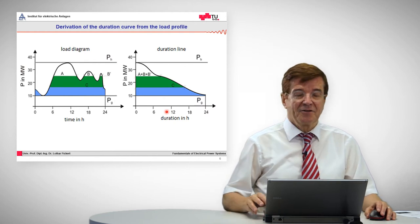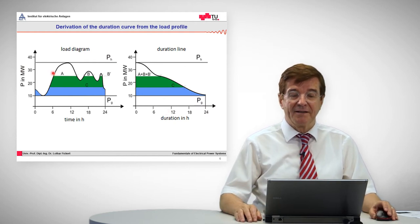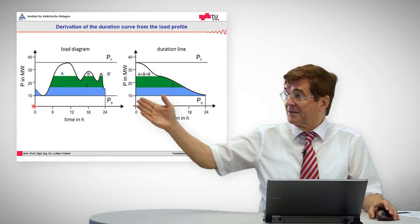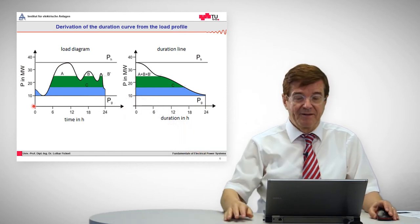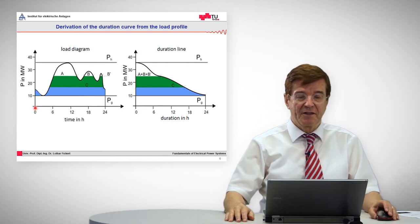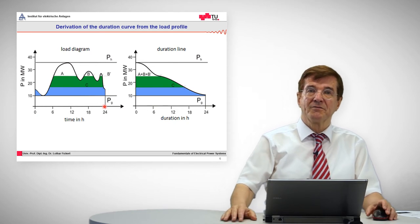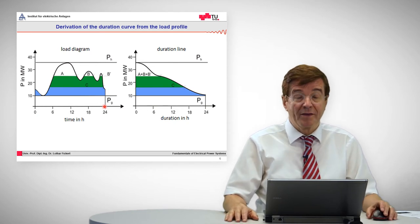This daily load diagram can be understood by this typical example for a load diagram. We start with the power that is consumed in a typical city, for example, versus the time and that is given as 24 hours, so one day.